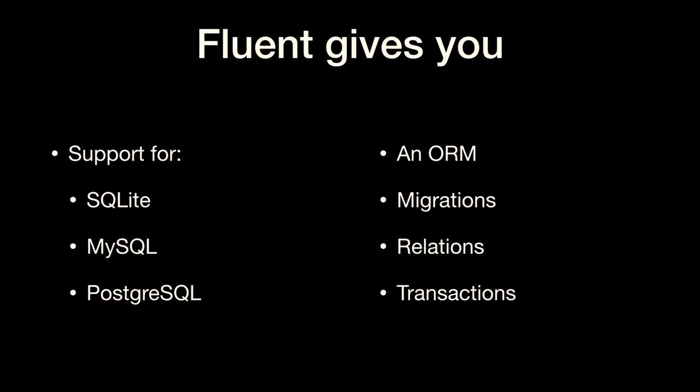Let's talk about the model. For Vapor, they use a library called Fluent — you can also use it standalone. Fluent supports SQLite, MySQL, and PostgreSQL. It's an ORM — Object Relational Mapper — so it deals with relational databases. One of the really nice things Fluent gives you are migrations. A migration is something built into the library where if your data schema changes, you don't have to write SQL to go change it. The library itself notices the change and generates all the SQL to update the database schema.